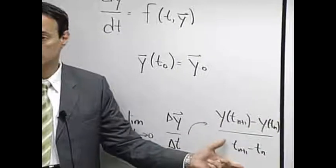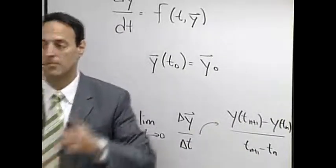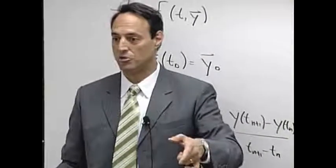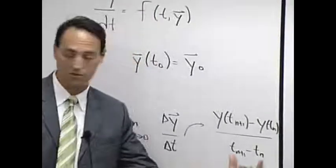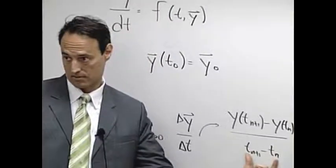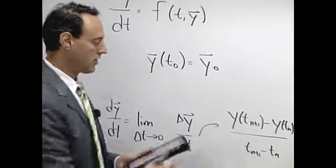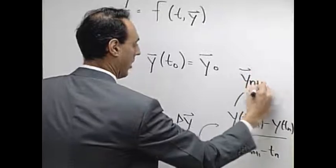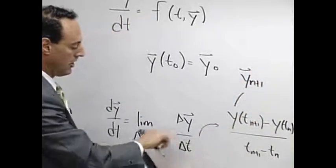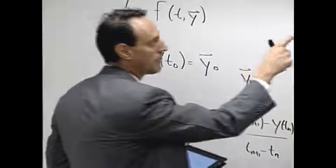My space and time at time t_n, time t_n plus 1 is my future time. So now I'm thinking about my Delta t being the difference between t_n plus 1 minus t_n. So I'll call this object here y_n plus 1.